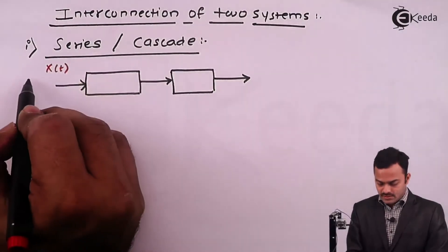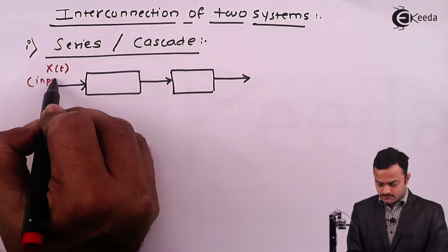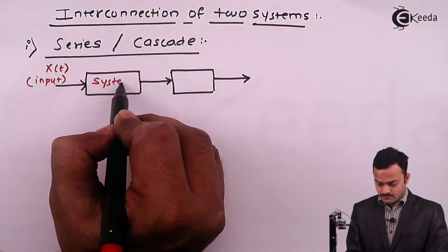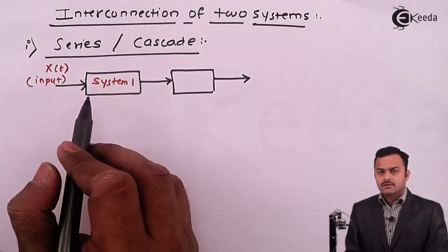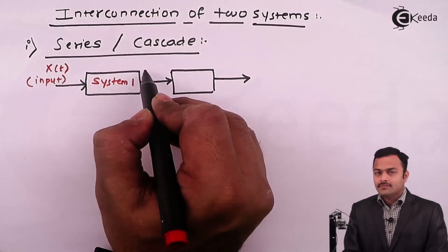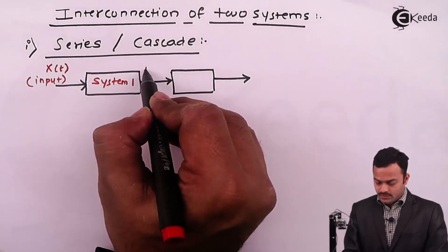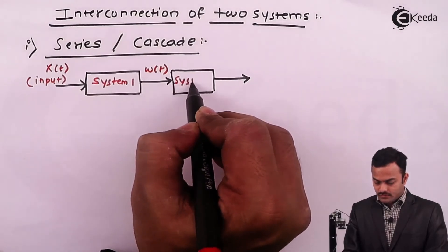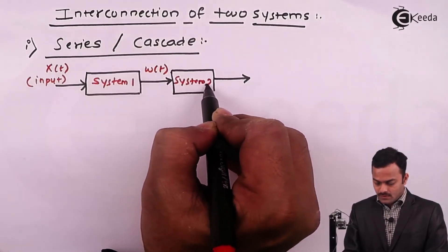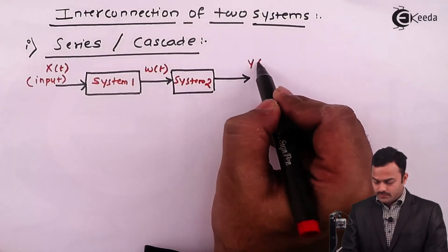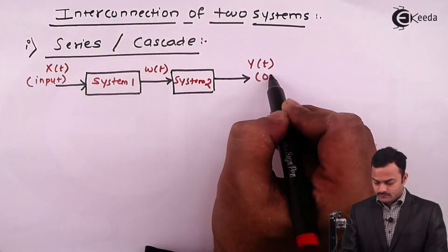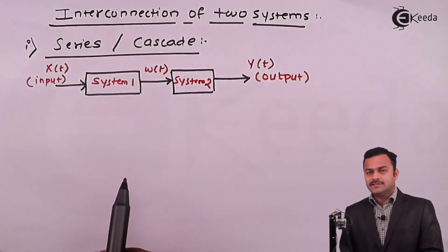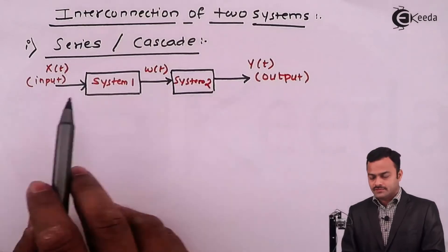x(t) as the input passes through System 1, which gives an output called intermediate output w(t). This intermediate signal then drives System 2 in order to get the final output y(t). So this is called a simple series or cascade connection of systems.